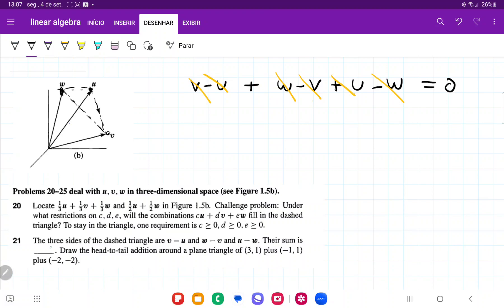And so their sum is equal to the zero vector, or the vector because we're in three dimensions, zero, zero, zero, and that is going to be here. Alright, and then it's telling us to draw the head to tail addition around the plane triangle of 3, 1 plus negative 1, 1 plus negative 2, 2.